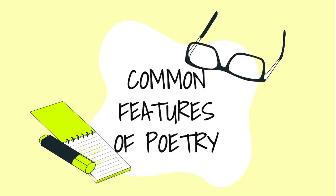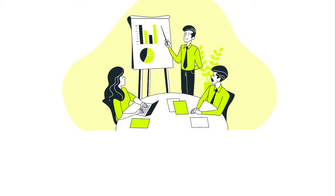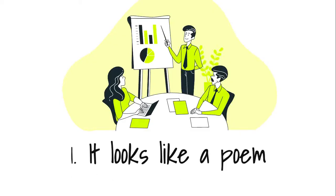Let's talk about the common features of poetry. First, it looks like a poem. If it looks like a poem and it reads like a poem, then the chances are pretty good that it is indeed a poem. Poetry comes in lines, some of which are full sentences, but many of which are not. Also, usually these lines don't run out to the margins consistently, like in, say, a novel. All this gives poetry a distinctive and recognizable look on the page.